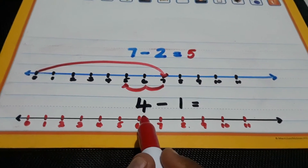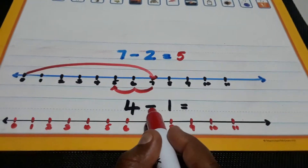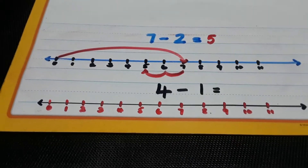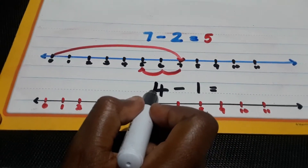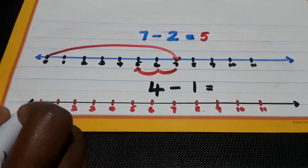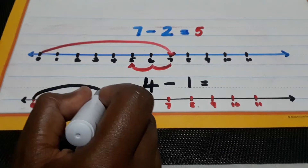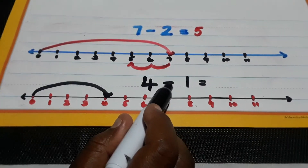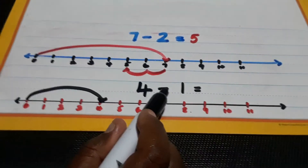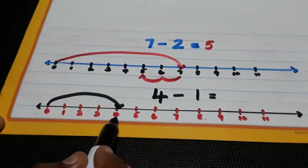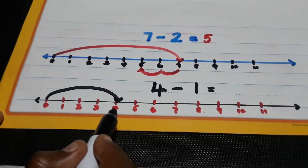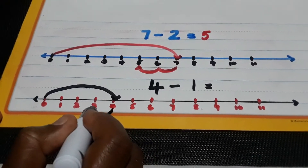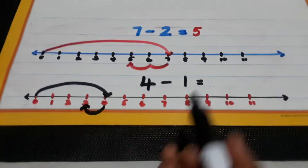Let's read this one: 4 minus 1 equals? We know the rule — look at your first number. It's 4. From your 0, take a big jump to 4 and place your arrowhead. The minus sign says we are to subtract or take away, so we go under the 4 and hop backwards only one time, and we stop at the numeral 3.